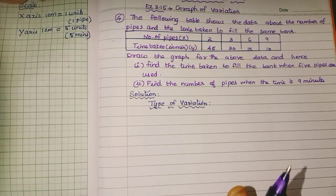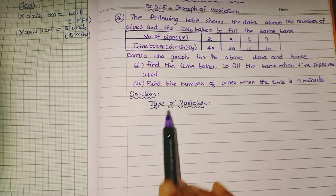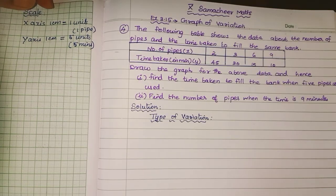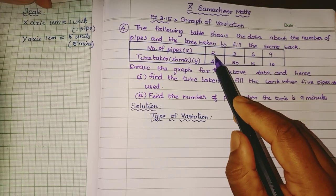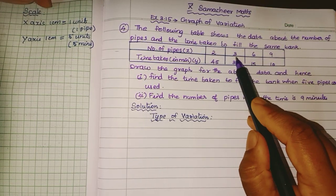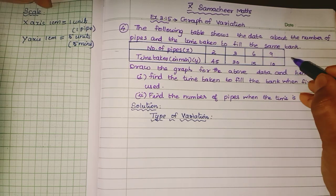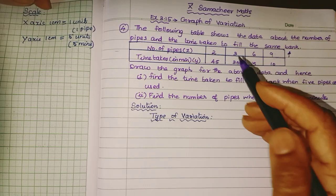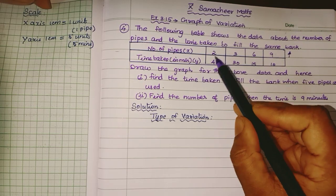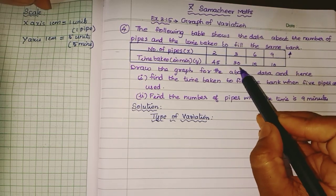So the first solution — what type of variation? Number of pipes increases: 2, 3, 6, 9 — this is increasing mode. Time: 45, 30, 15, 10 — this is decreasing. So x increases, y decreases. Therefore pipe × time = 2 × 45 = 90.